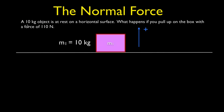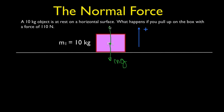Let's try one more: a 10-kilogram box on a horizontal surface — what happens if you pull up on the box with a force of 110 Newtons? Drawing the forces: we have the weight mg and an applied force upward. The weight is 98 Newtons and the applied force is 110 Newtons. Since the pull upward is more than the weight, we know there is no normal force — the box is being lifted off the surface, giving us an unbalanced force.